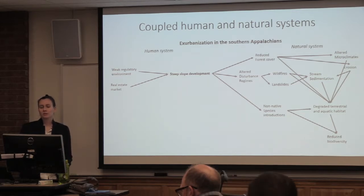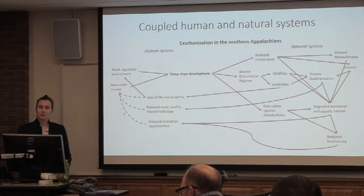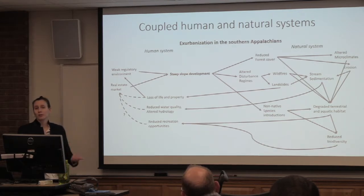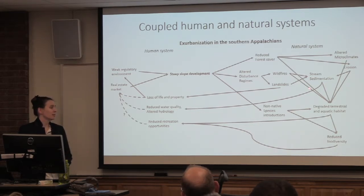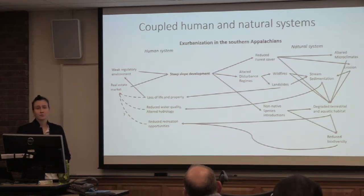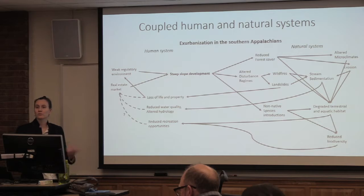But we really want to think about what's going on with how things feed back into the human system. We know that landslides lead to loss of life and property, and that loss can create momentum for regulations to be passed. Stream sedimentation produces reduced water quality and altered hydrology, which can create flood hazards and reduced drinking water quality. We suspect that degraded habitat and reduced biodiversity can reduce recreation opportunities — and these things may affect the real estate market eventually, because they're taking away the natural and scenic amenities that people moved there for.